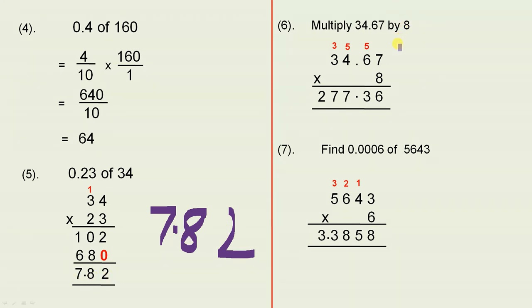Multiply 34.67 by 8, so that's simple multiplication. 8 sevens are 56. 8 sixes are 48, plus 5 is 53. 8 fours are 32, plus 5 is 37. And 8 threes are 24, plus 3 is 27. So you get 277.36.